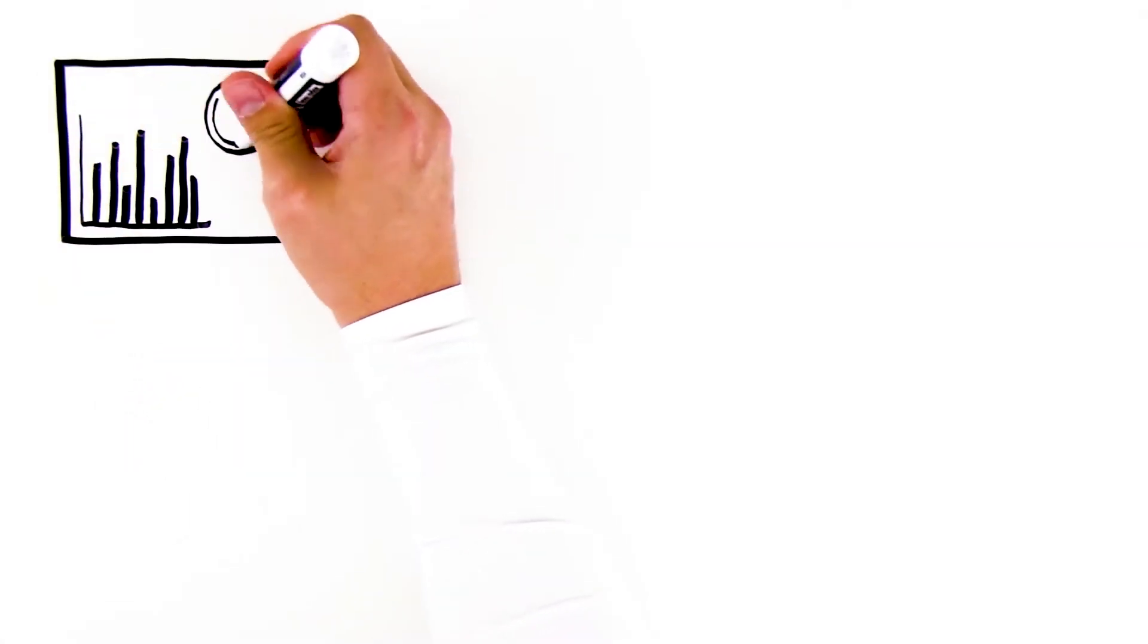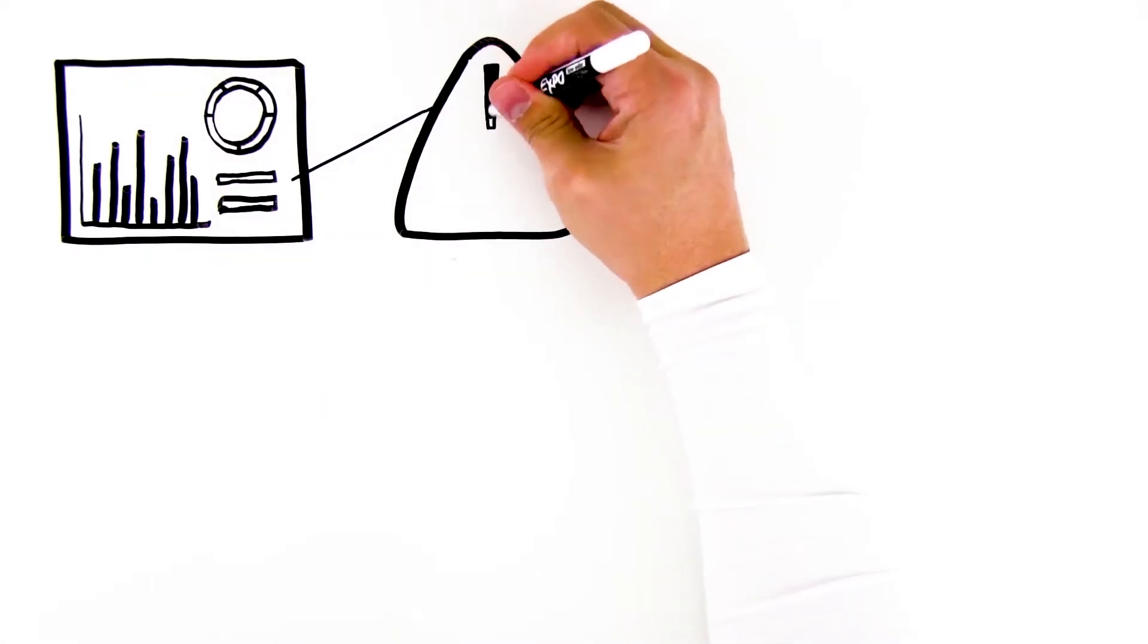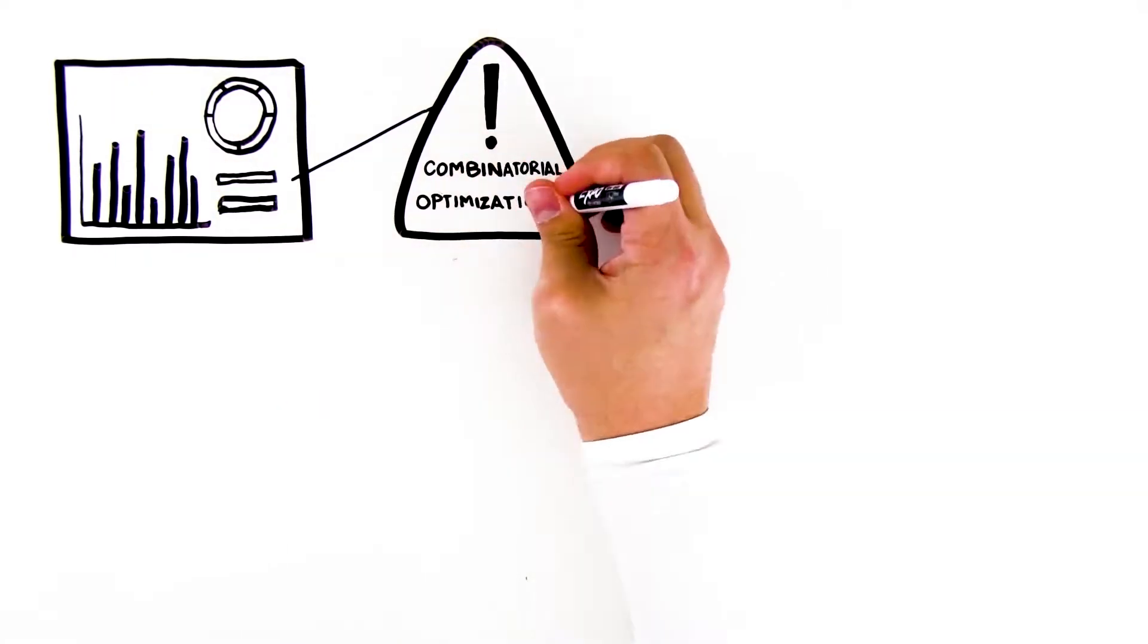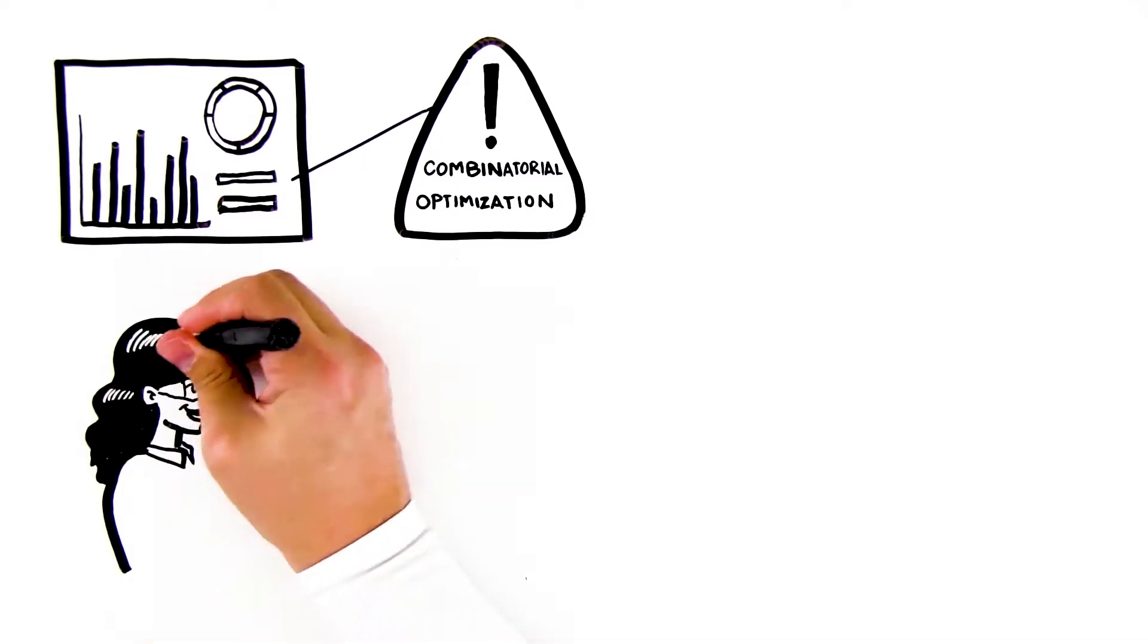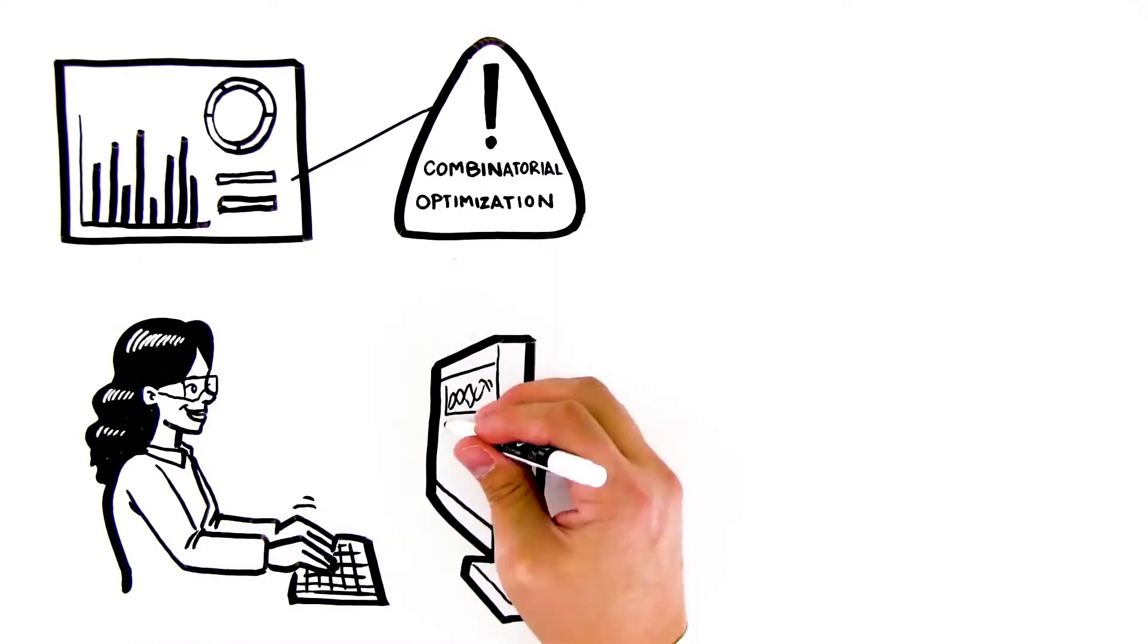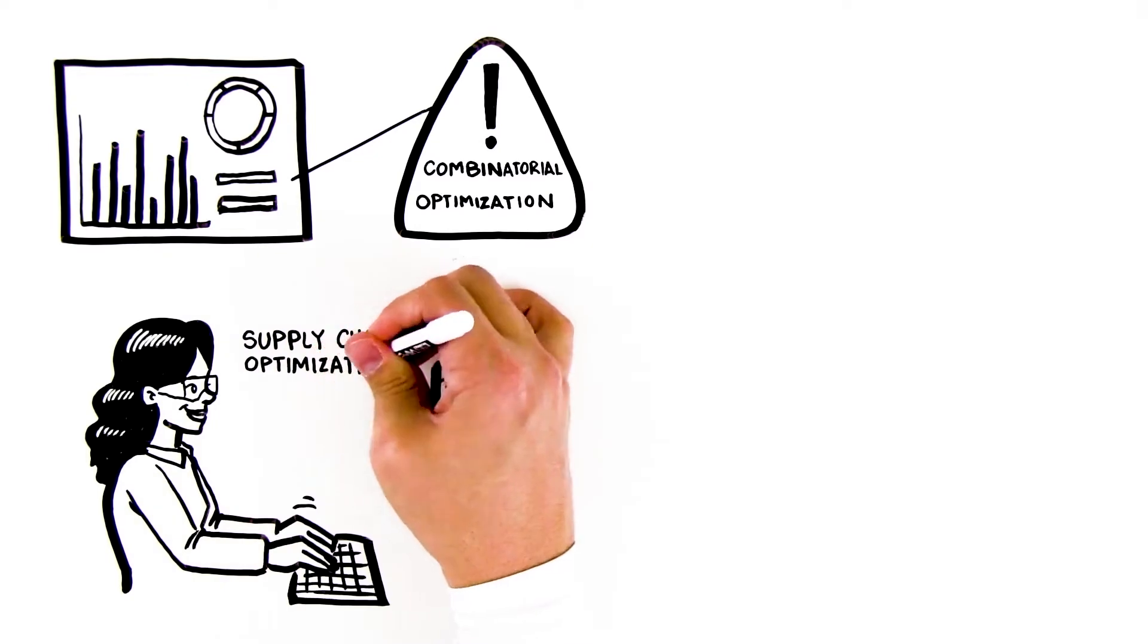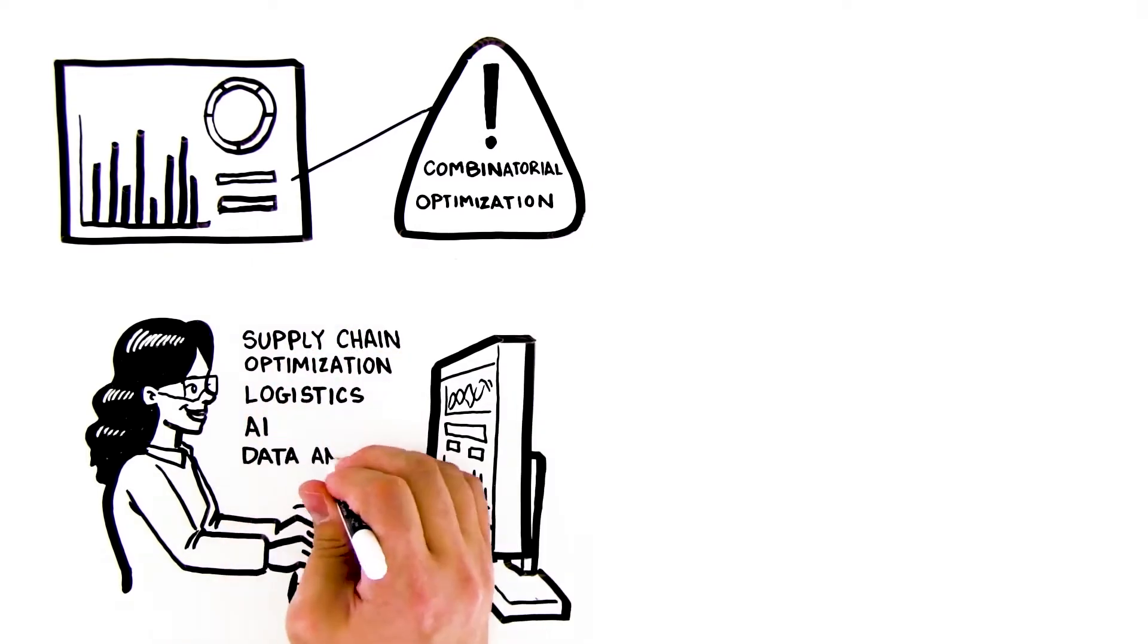Virtually every industry faces a class of computational problems known as combinatorial optimization. They represent some of the most valuable yet computationally challenging problems and are commonly found in supply chain optimization, logistics, AI, and data analytics.